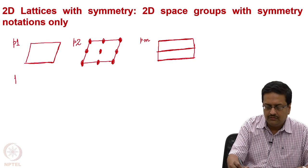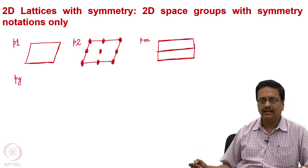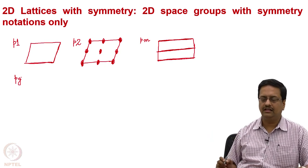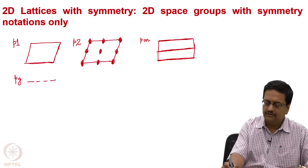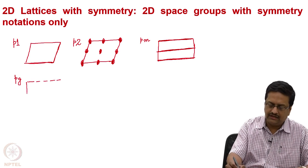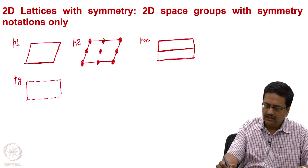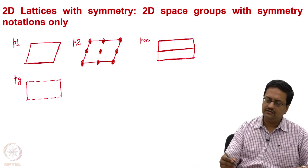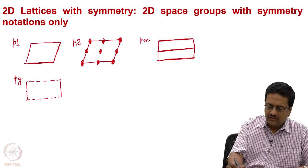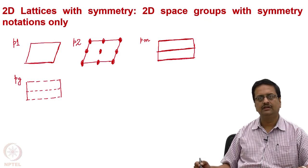Let us try to draw Pg. 'g' is a glide plane, and this glide plane is going to run in the horizontal direction in a rectangular lattice. The vertical lines are just lines and they are not mirrors, so I am not making them bold. The up and down edges indicate the glide. Again, a glide plane is further generated in the middle of this unit cell, and this is the notation for Pg.